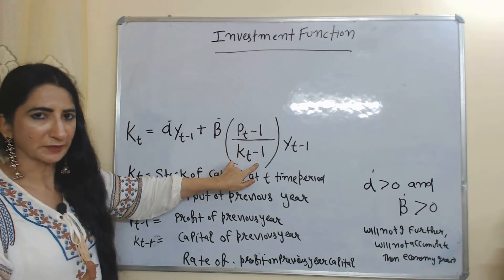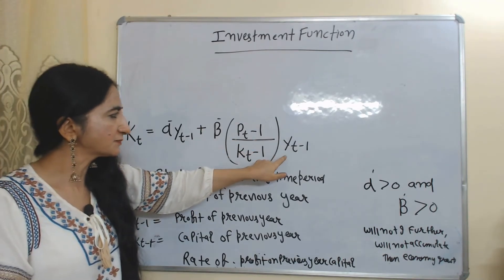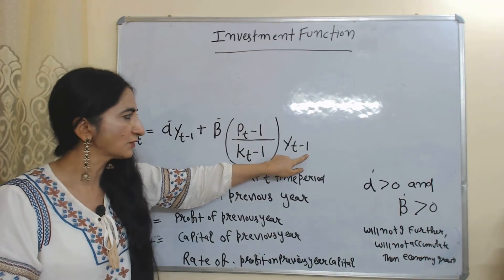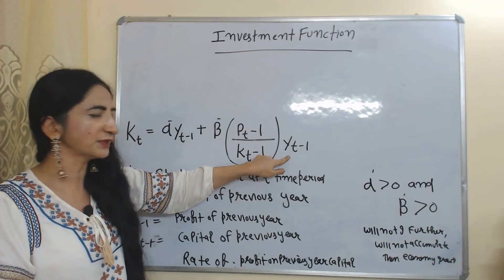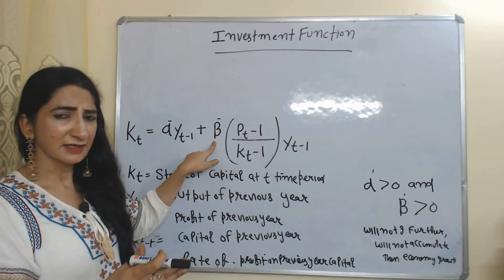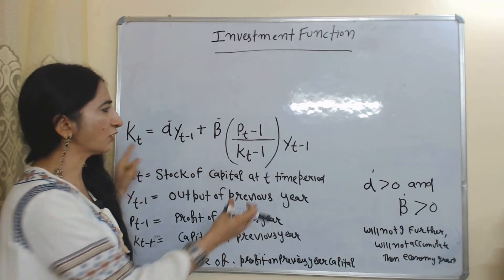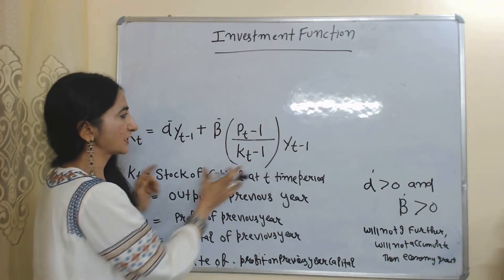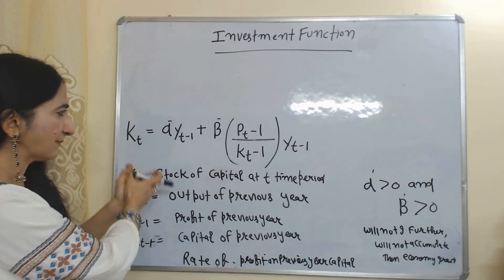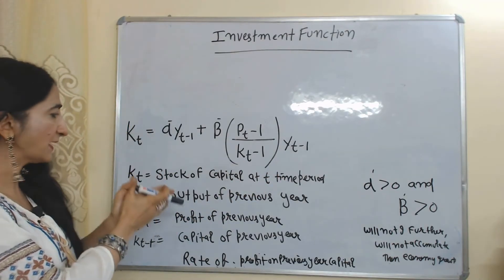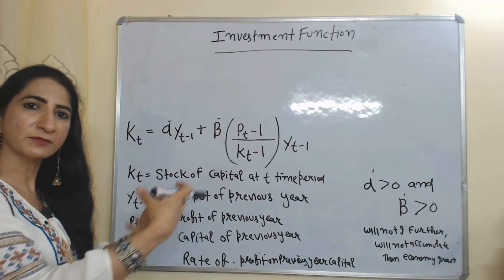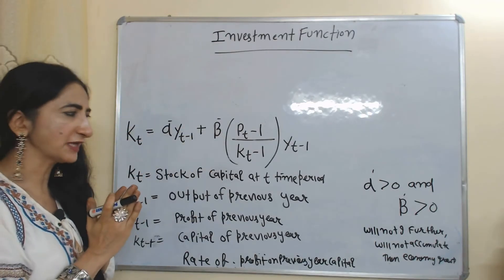We multiply the rate of profit on previous year's capital by the previous year's output (YT minus 1), and beta-dash is the coefficient of this whole part. According to this equation, our current capital stock depends on the previous year's output plus the rate of profit on the previous year's capital.